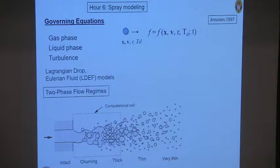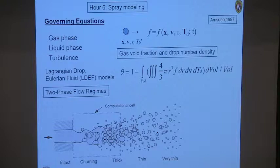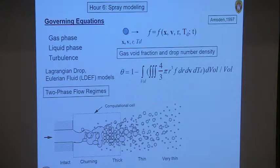You'd like to have that function available so you can characterize the two-phase flow. For example, you might be interested in calculating the gas void fraction — how much of the cell is occupied by gas and how much by liquid. If I have the distribution function in terms of size, velocity, temperature, and the volume of interest, I can integrate over the probability distribution function and calculate the void fraction. If there are no droplets, the void fraction is one, because f is zero.